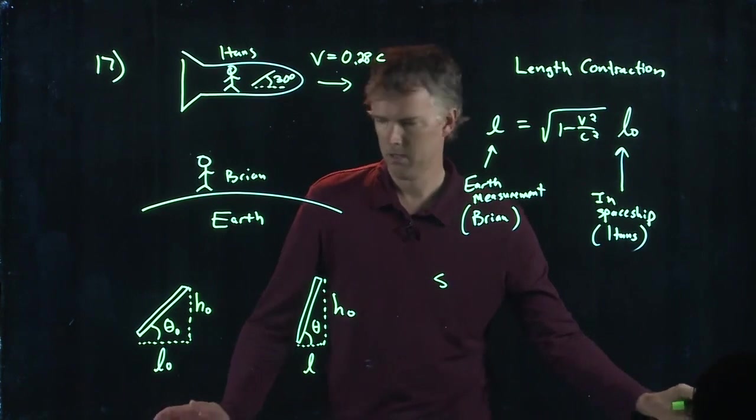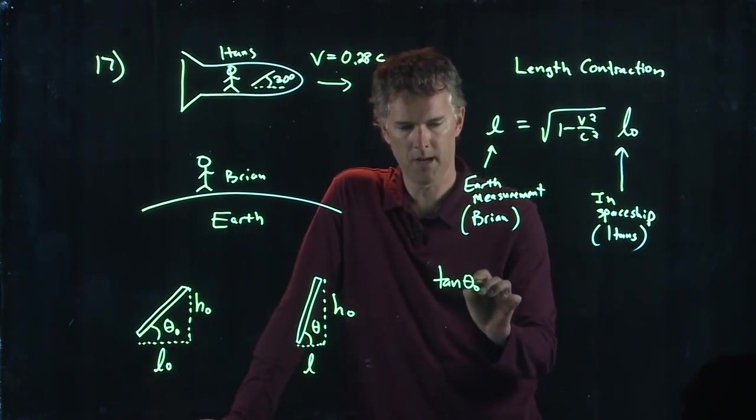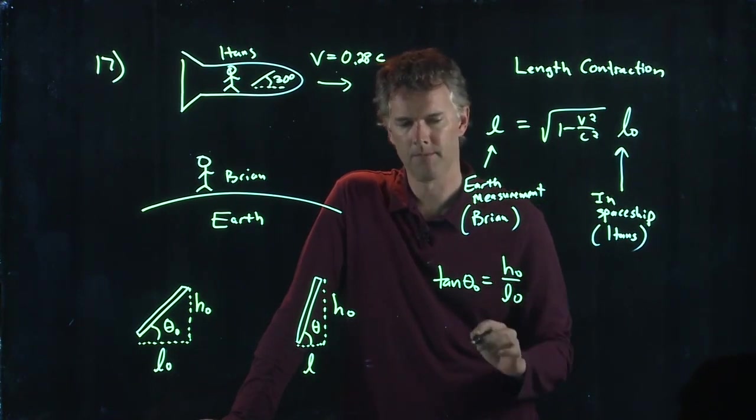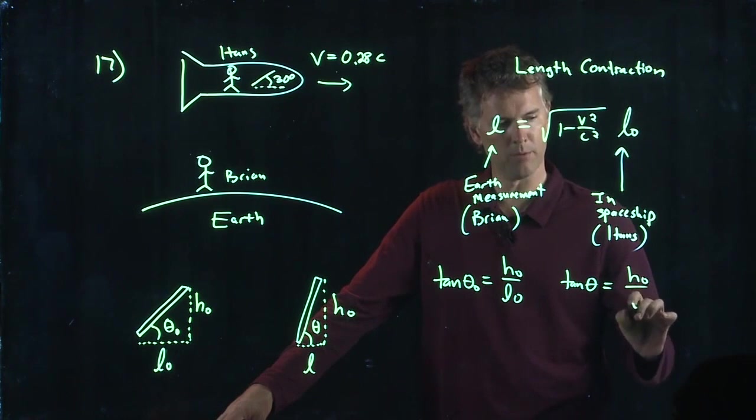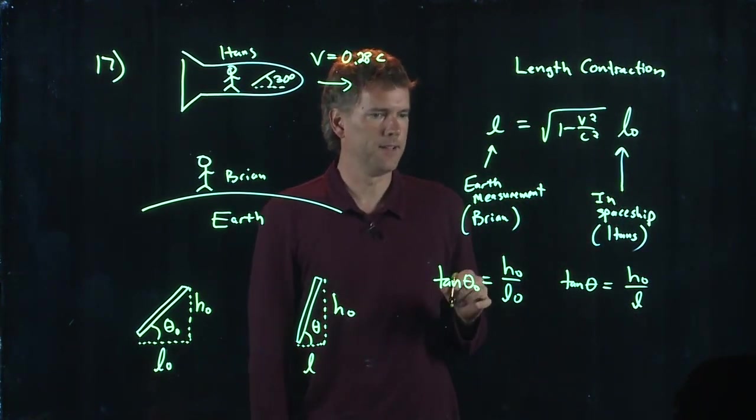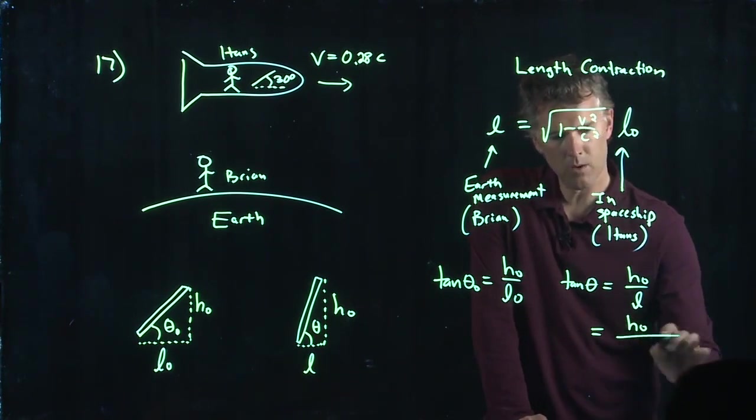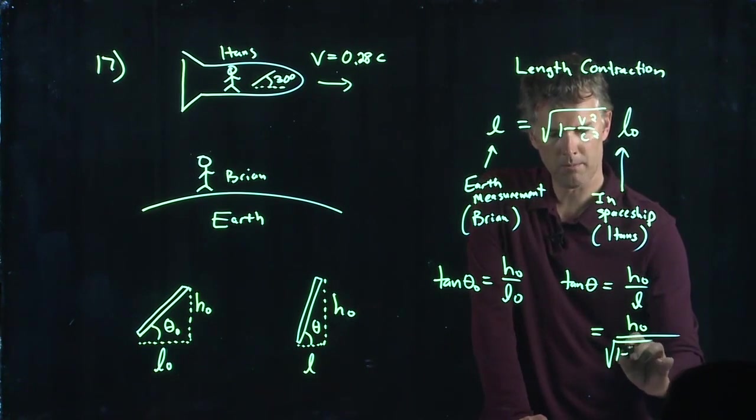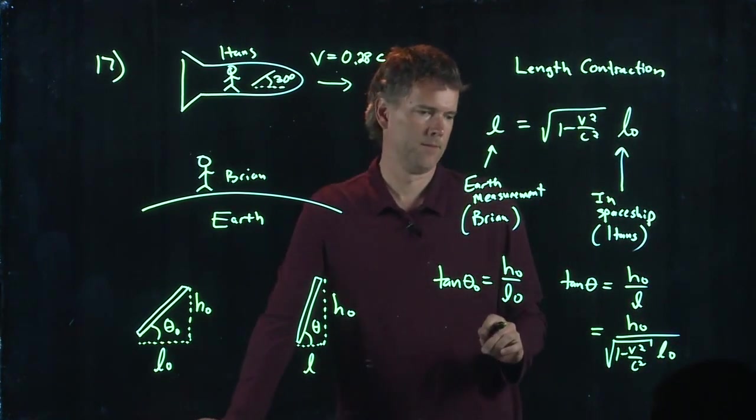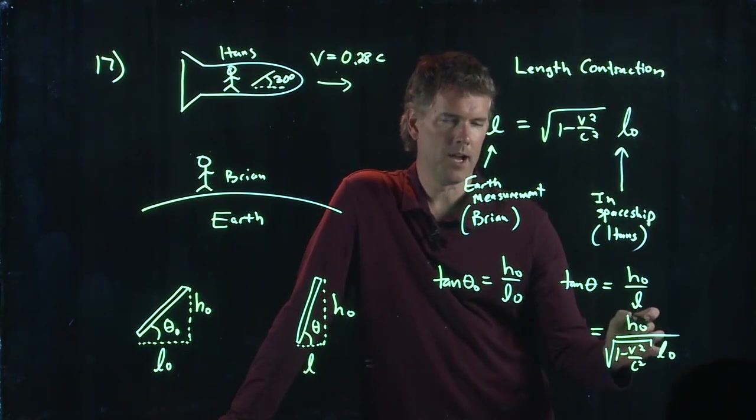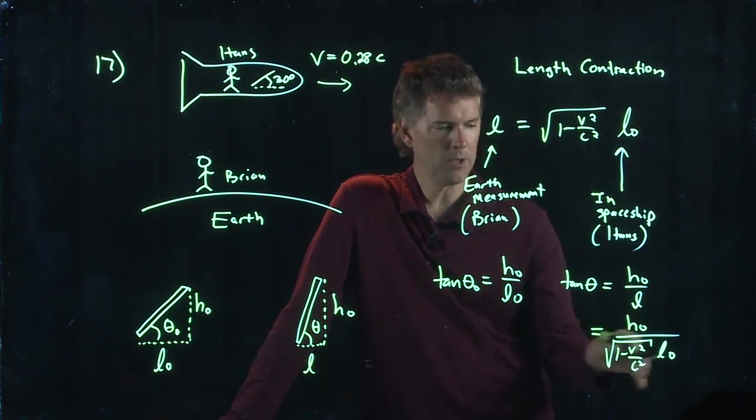What is the tangent of theta-naught? The tangent of theta-naught is H-naught over L-naught. What's the tangent of theta? Tangent of theta is H-naught over L. But H-naught over L is the same as H-naught over the square root, one minus V-squared over C-squared, all of that times L-naught. And H-naught over L-naught, we know what that is. That's just the tangent of theta-naught.